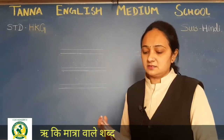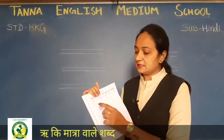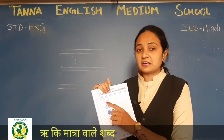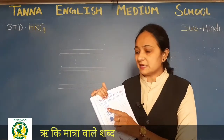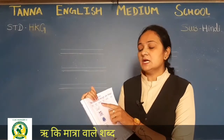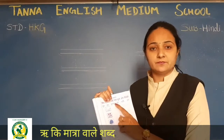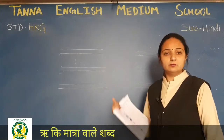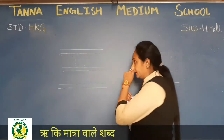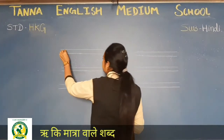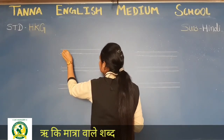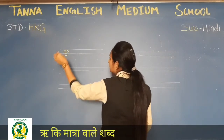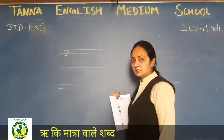अभी पहला कौनसा picture है? Farmer है ना। Farmer को हम Hindi में क्या बोलेंगे? कृषक। Okay, so you have to write from the board. Chalo, likhो — yahan pe k karo. Finish — a, ri ki matra karo.